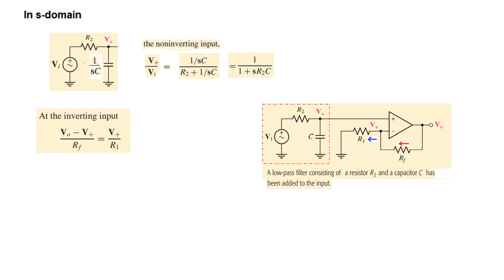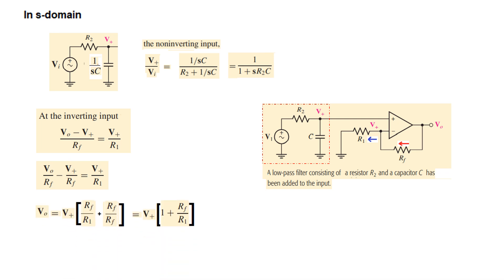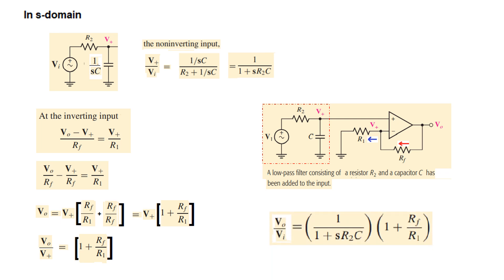We take this as V_plus and write two current equations. Current entering is V_out minus V_plus divided by RF, and current leaving is V_plus over R1. By simplifying, we get V_out expressed in terms of V_in, giving V_out over V_in equals 1 plus RF over R1 — which is the gain of a non-inverting amplifier. The total gain of the circuit is the combination of these two gains. Remember this for solving problems.